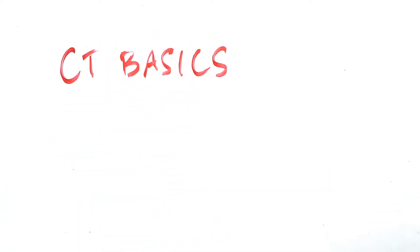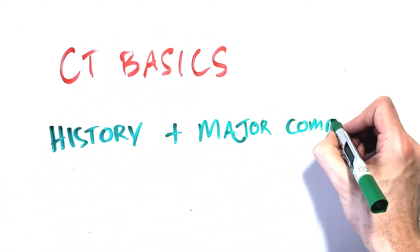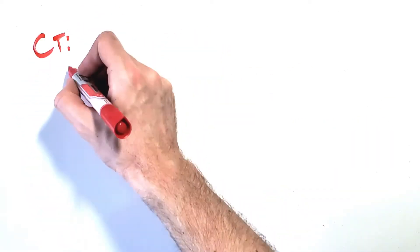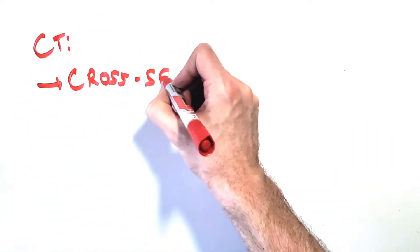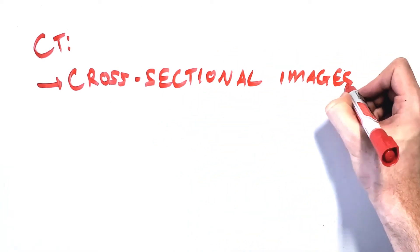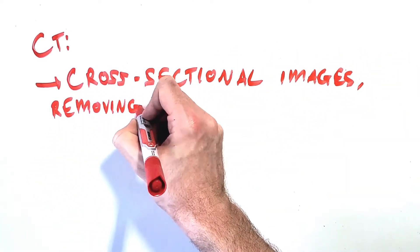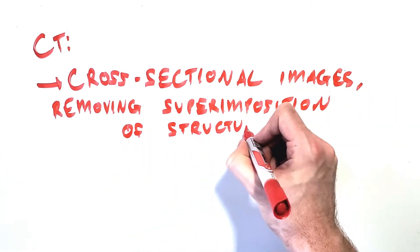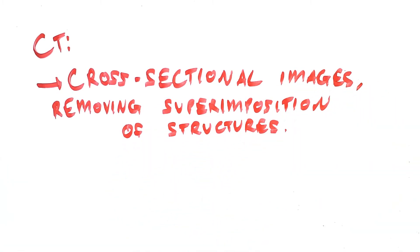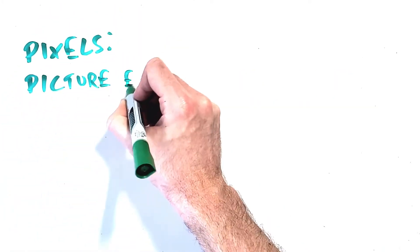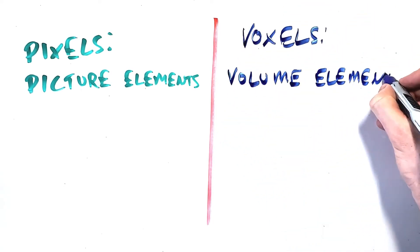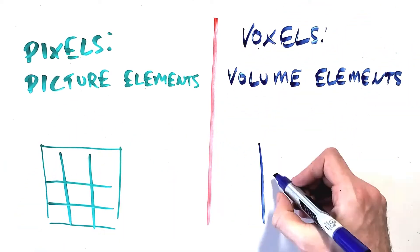In this video we're going to discuss the major components and a brief history of CT scanners. When compared to conventional radiography, CT has the advantage of eliminating superimposition of structures by acquiring data in slices in the axial plane, which can then be reconstructed into a volumetric dataset with three-dimensional information. So where conventional radiography has us thinking in pixels or picture elements, CT has us thinking in voxels or volume elements.